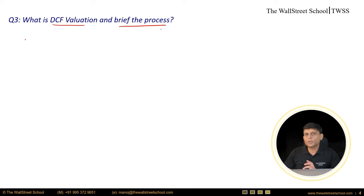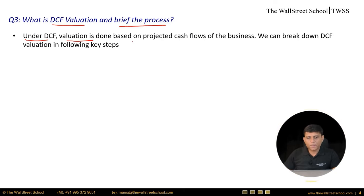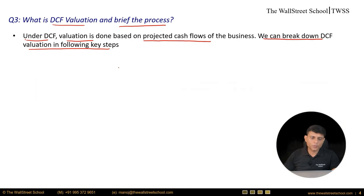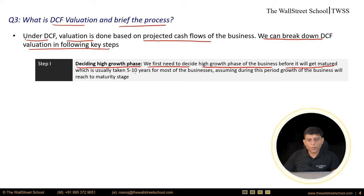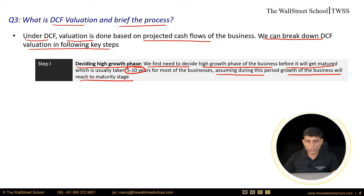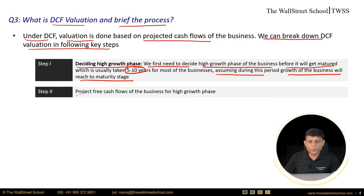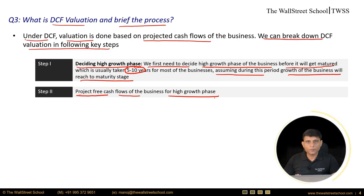Question number three: what is DCF valuation and what is the process? Under DCF valuation, the valuation is done based on projected cash flows of the business. Step one is deciding the high growth phase — we first need to decide the high growth phase of the business before it reaches maturity, which we normally assume to be 5 to 10 years. Step two is to project free cash flows of the business for that high growth phase.